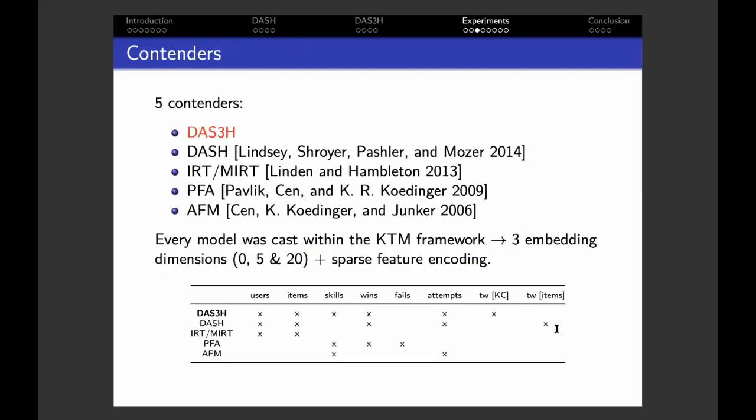As for the contenders, we compared our new DAS3H model to the DASH model I was talking about previously, also to the item response theory model, to the performance factor analysis model, and to the additive factor model, which are all state-of-the-art student predictive models. However, to ensure a fair comparison between these models, we cast them within the knowledge tracing machines framework, like DAS3H, and we use for these three different feature embedding dimensions: zero, five, and twenty. This table here shows the features used by each of the compared models, and I'd be happy to give more details during the Q&A session.